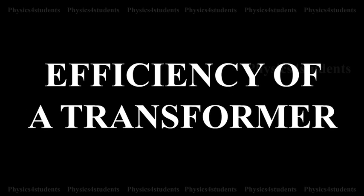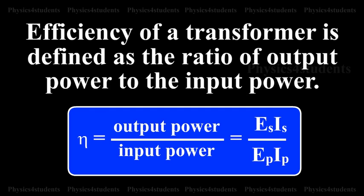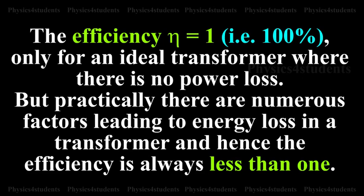Efficiency of a transformer is defined as the ratio of output power to the input power. Eta = output power / input power = ES×IS / EP×IP. The efficiency Eta equals 1, that is 100%, only for an ideal transformer where there is no power loss. But practically, there are numerous factors leading to energy loss in the transformer, and hence the efficiency is always less than 1.